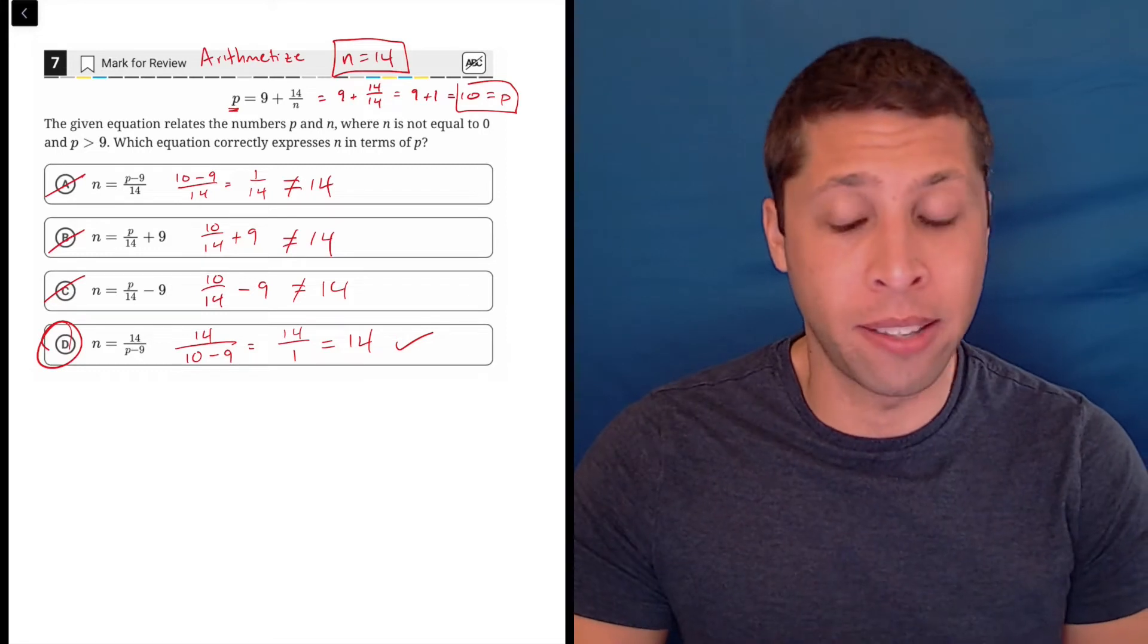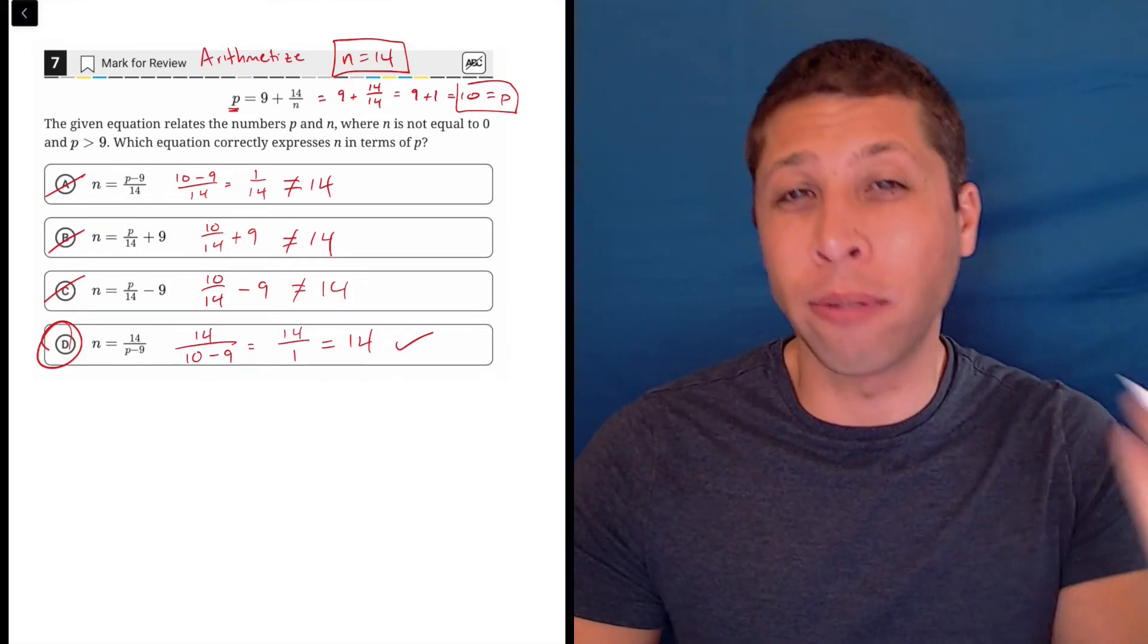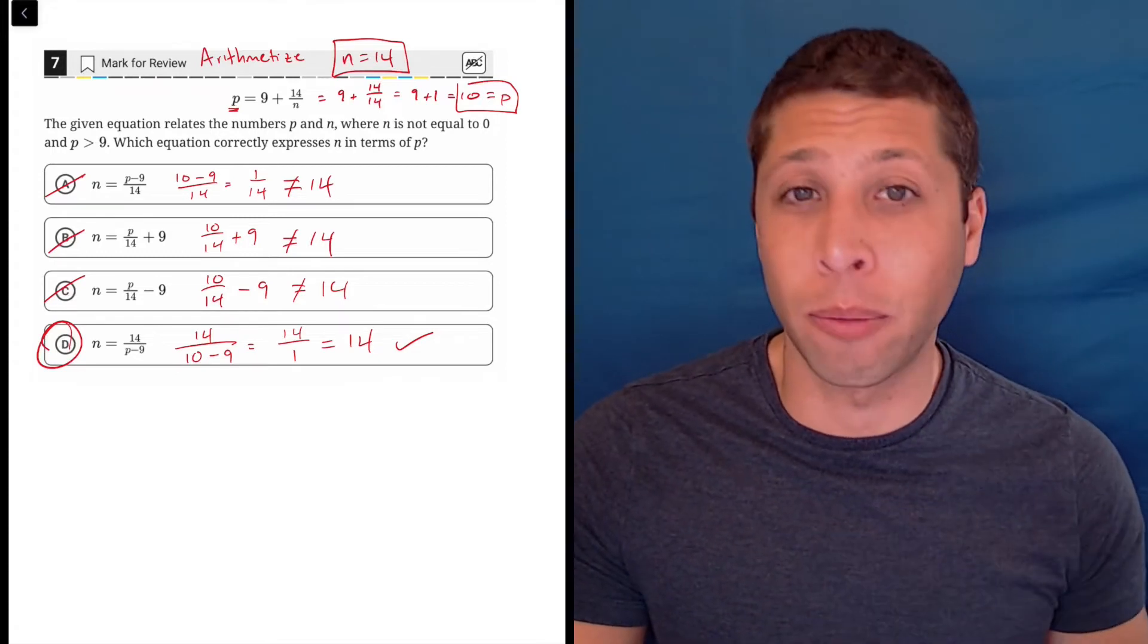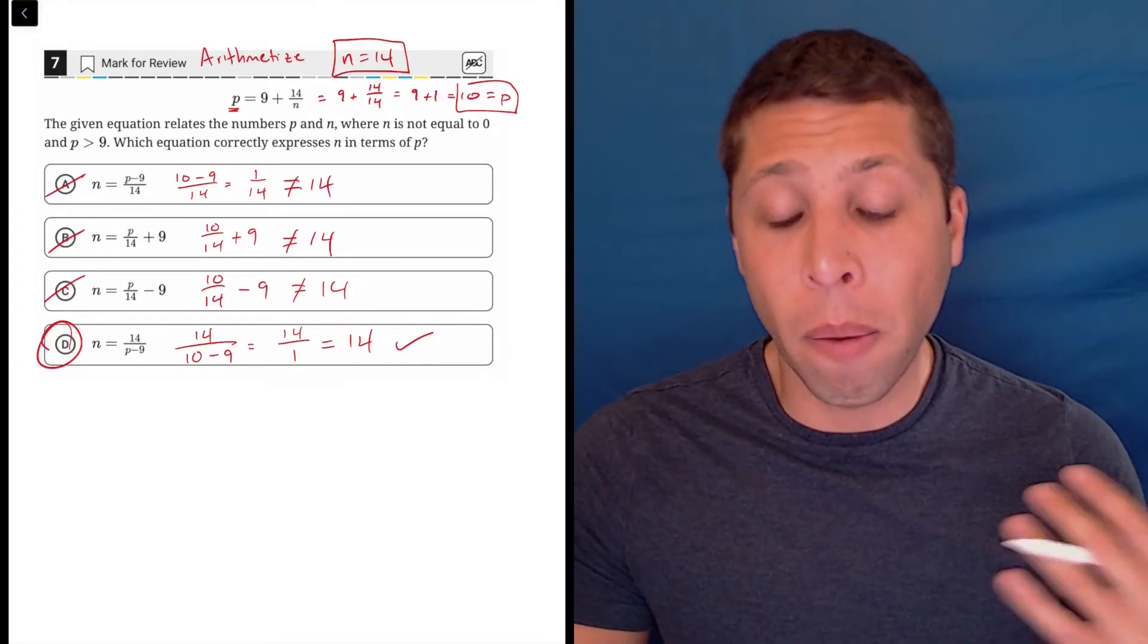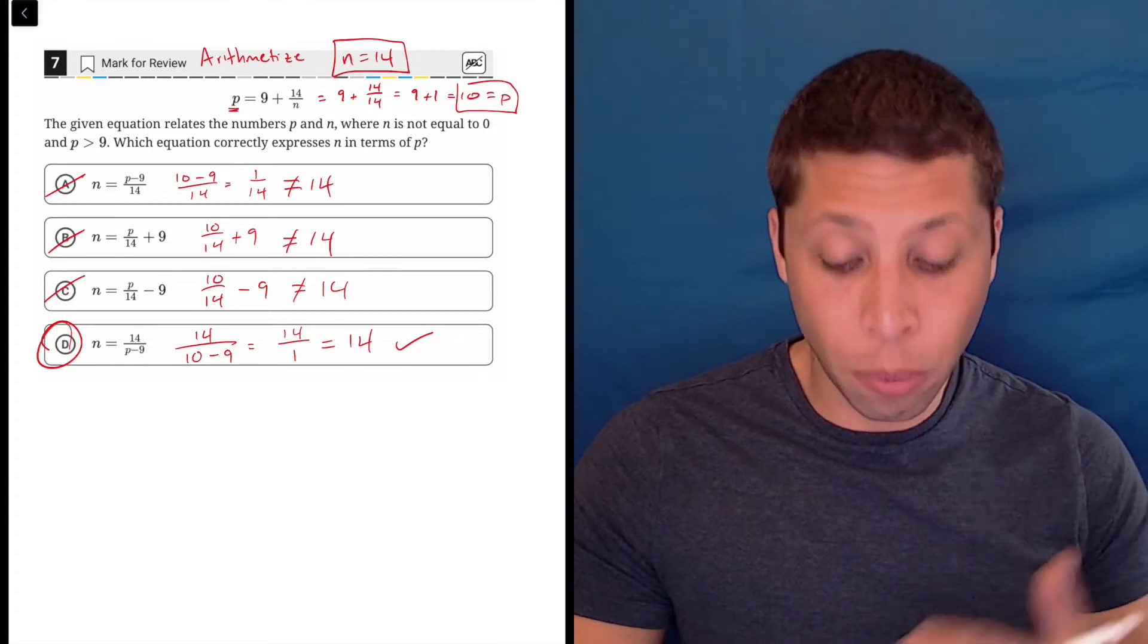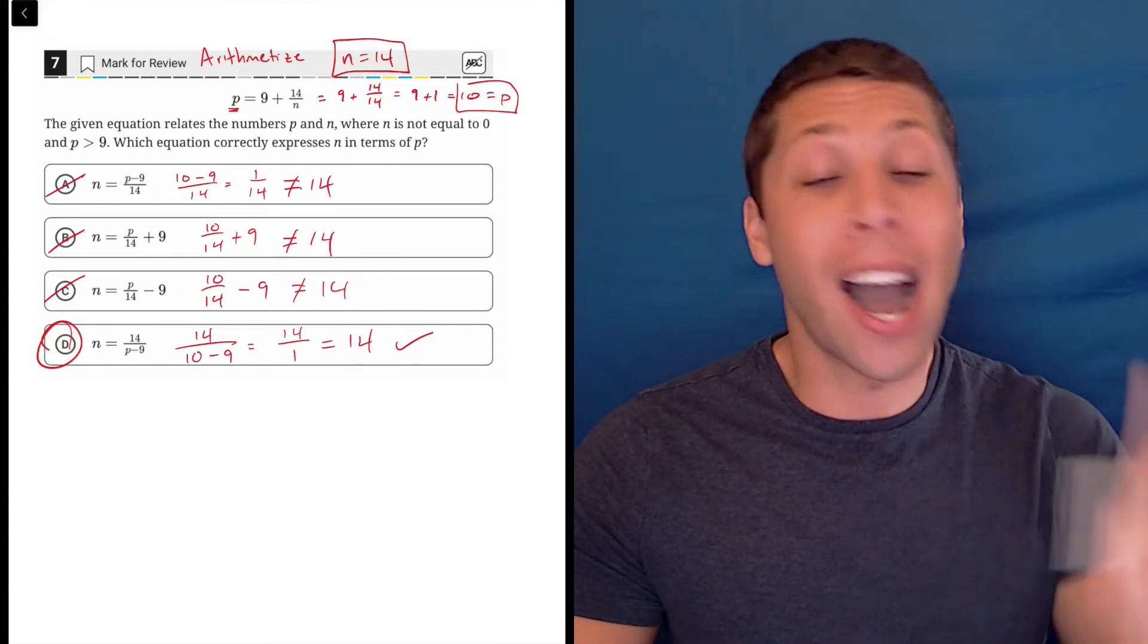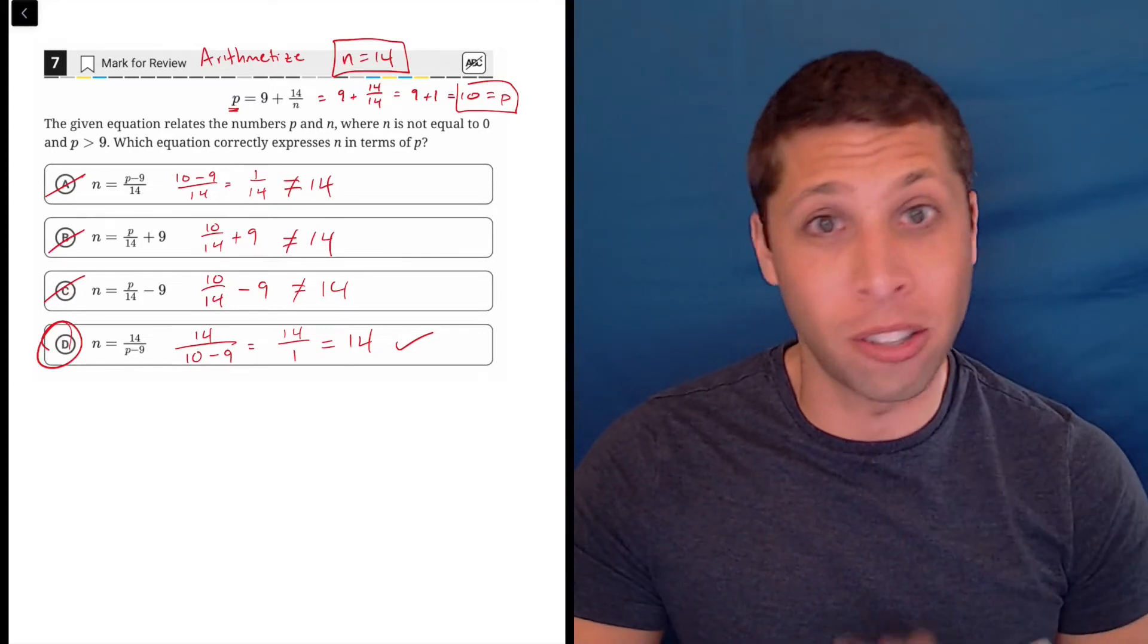Now, sometimes when we Arithmetize, multiple answers will work with the point we chose. And it's not the end of the world. We just choose a new point and test whatever answers are left, but it's just a reminder that we always need to check every answer choice. So if for some reason choice D was at the top and it had worked right away, I'd still need to check the other answer choices to be sure.